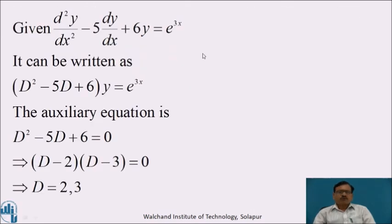The given equation is d²y/dx² - 5 dy/dx + 6y = e^(3x). In symbolic form it can be written as (D² - 5D + 6)y = e^(3x). We calculate CF using the auxiliary equation: D² - 5D + 6 = 0. Factoring gives (D-2)(D-3) = 0, so D = 2 and D = 3.